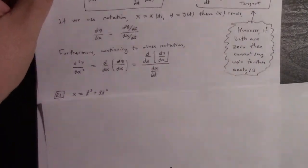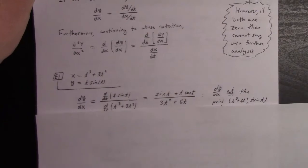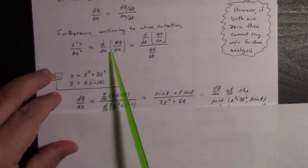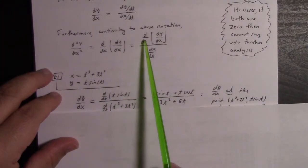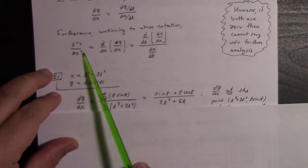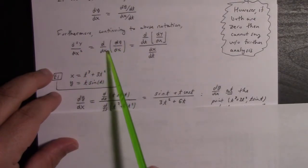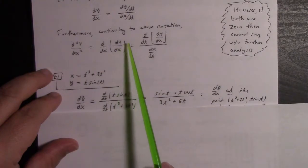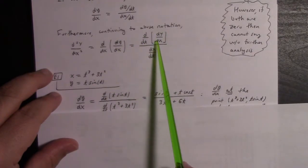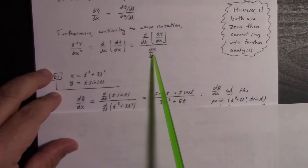You can also calculate the second derivative by differentiating the first derivative. So d²y/dx² at time t is given by d/dx of that, which we can understand in terms of the time derivative of dy/dx as a function of time divided by dx/dt.